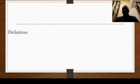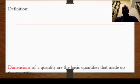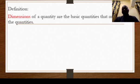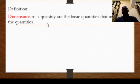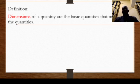What is dimensional analysis? The dimension of a quantity refers to the basic quantities that make up that quantity. In another way, dimension can also be described as a way of representing a quantity in terms of its fundamental quantities. Fundamental quantities are quantities that other quantities depend upon.